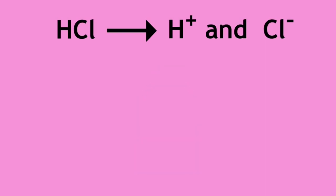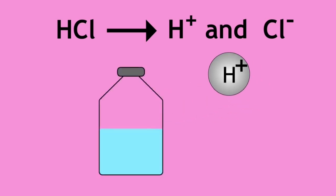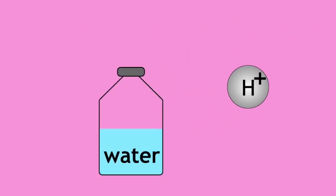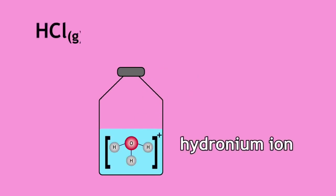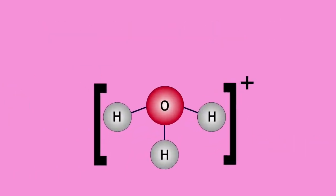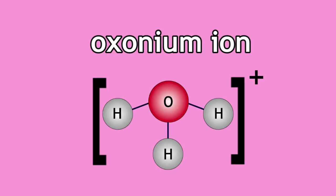The proton is not just released, but it is transferred to another substance. In our example, water accepts the proton to form a hydronium ion. A hydronium ion is also known as an oxonium ion.